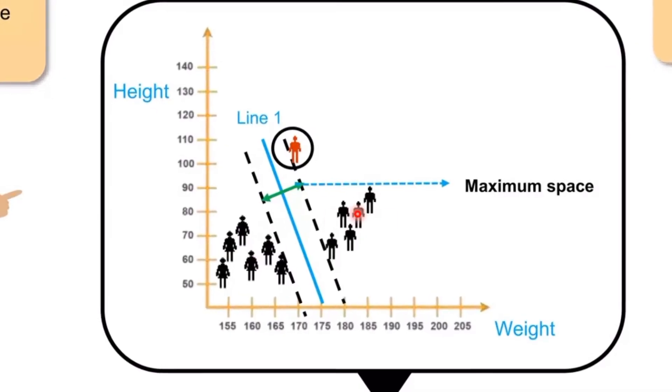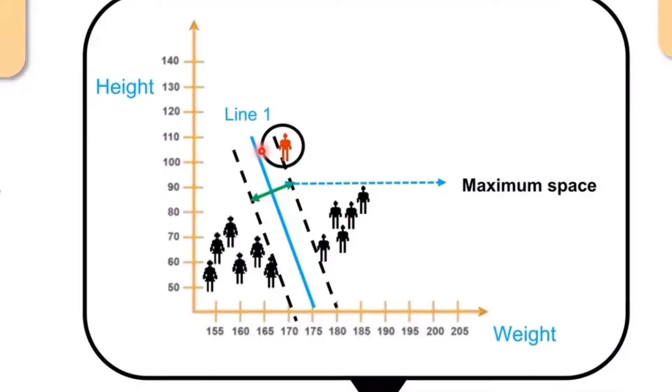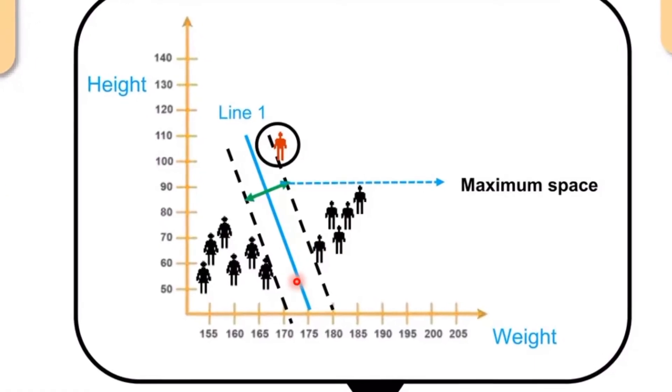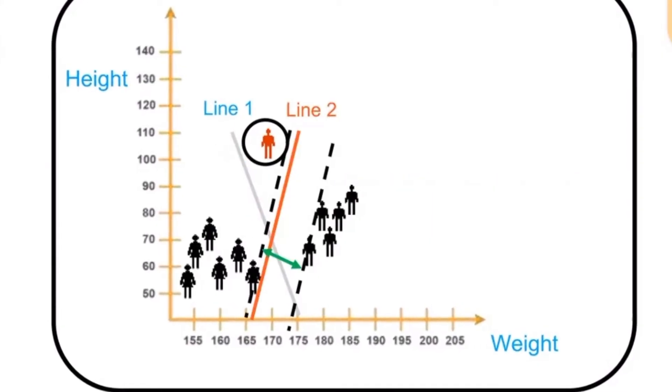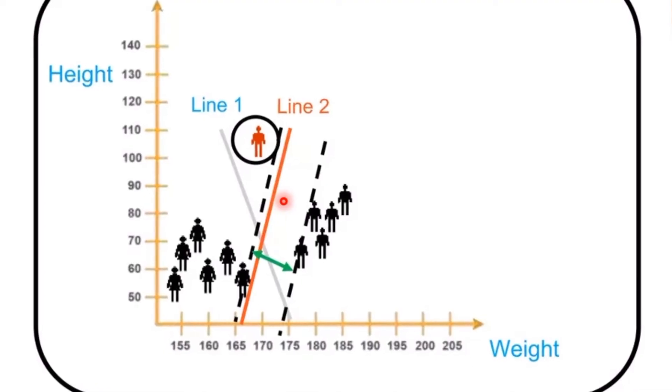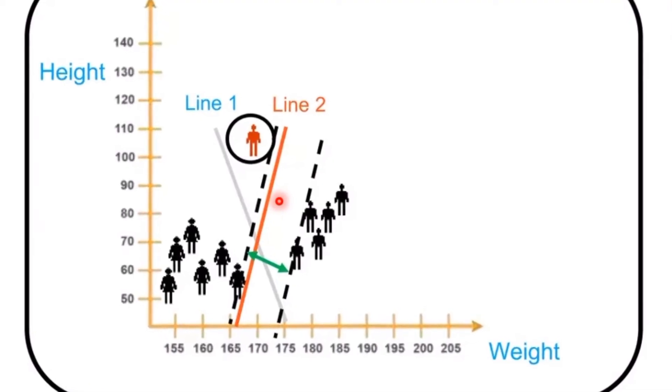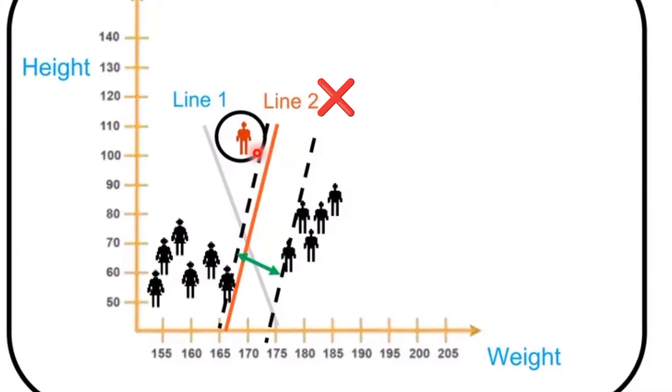Here it is class 1 and this is class 2. Compared to line 2, line 1 has the maximum space. But line 2 is having only the minimum amount of space, so line 2 is omitted and line 1 is taken.